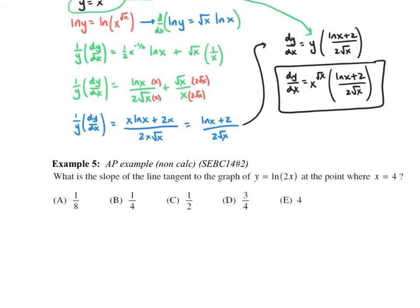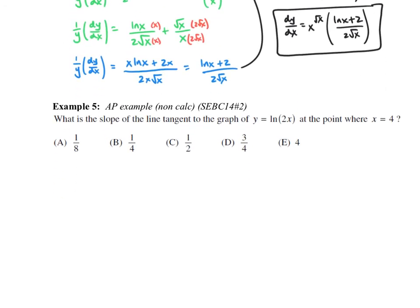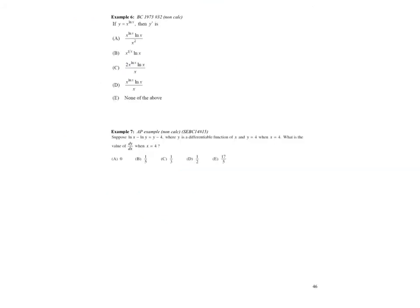Example 5 asks for the slope of the tangent line to the graph of y at x = 4. The derivative is 1/(2x) times 2 by the chain rule, which simplifies to just 1/x. Evaluating at x = 4 gives a slope of 1/4. Much easier than the last problem!